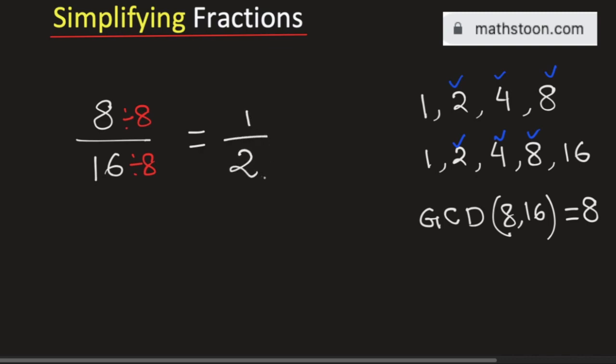As 1 by 2 cannot be simplified further, 1 by 2 is the simplified reduced form of the fraction 8 by 16. And this is our final answer. Thank you for watching.